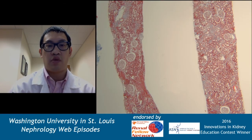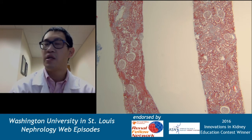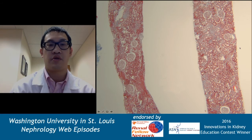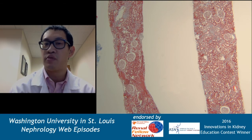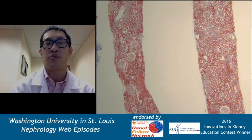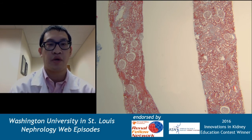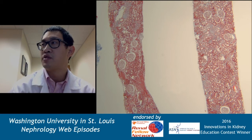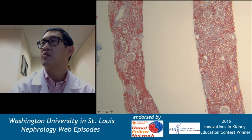Here is another example of a trichrome — it looks a little different from the last one, which just varies from institution to institution. Some trichromes will stain more blue, some more red, and it really depends. Again, what you can appreciate here is that there are two cores of kidney tissue, several glomeruli, lots of tubules back to back. There are some patchy areas with a little bit of fibrosis, but for the most part this looks pretty good.